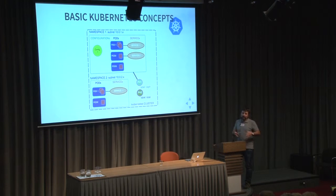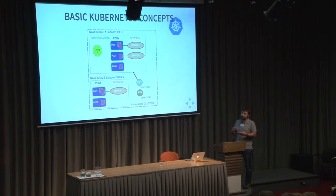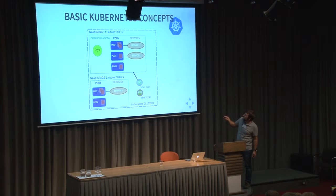Each pod — a pod is like a machine — gets an IP address. You can run one or several Docker images on it. Those Docker images on the same pod can communicate with IPC or using localhost as an IP address. Pods can implement services. Services are published on the DNS in the cluster, so a service is reachable as service-one dot namespace-one dot cluster, and it can be reached this way automatically upon creation.